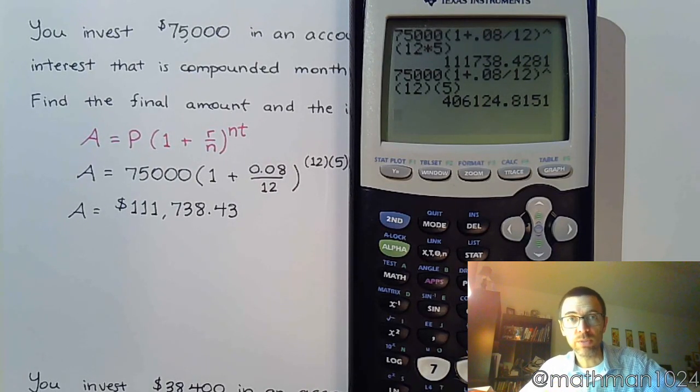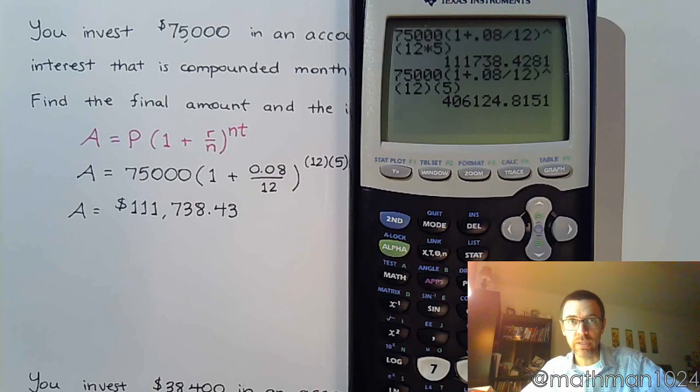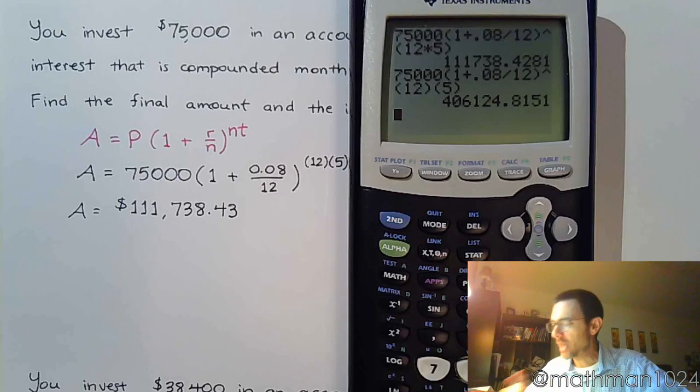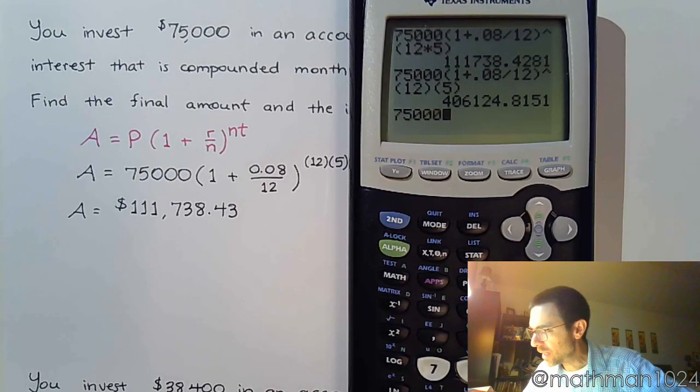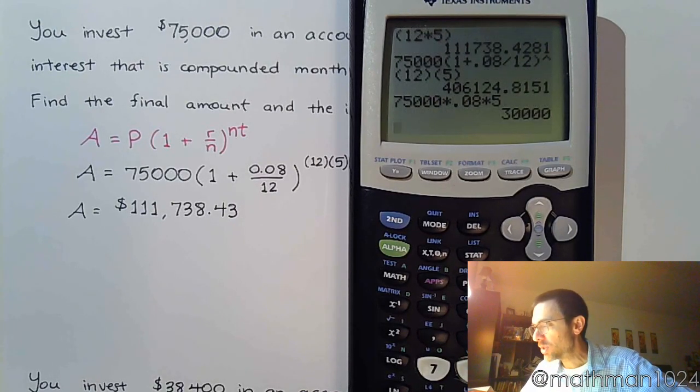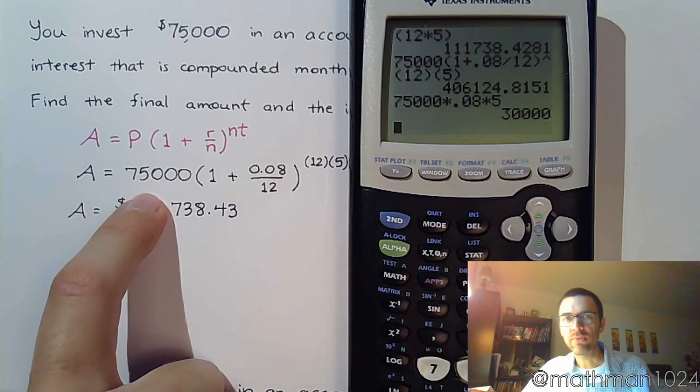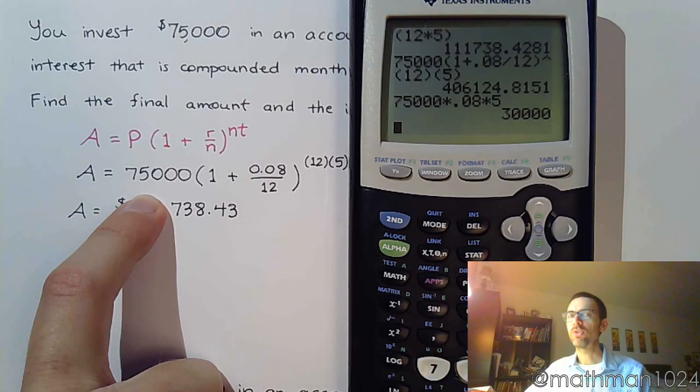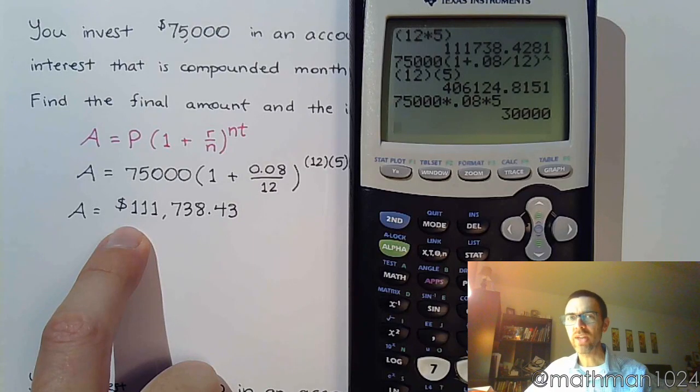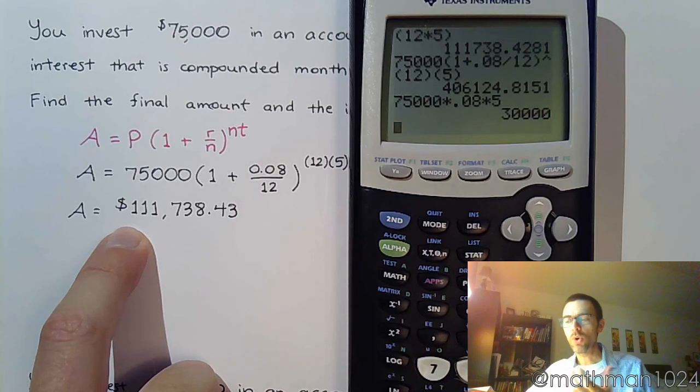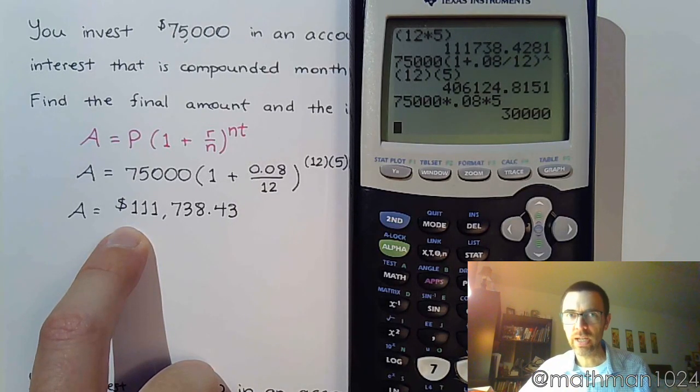Well, you can do a calculation of simple interest to get an estimate for, like, the bare minimum interest that you should earn. And, the simple interest calculation is taking your principal times your rate times your time in years. So, it tells me that a rough estimate for how much interest I should earn is $30,000. So, $30,000 plus the $75,000 I start with gives me $105,000. So, the $111,000 is not really that far off. And, it makes sense because of the way that compound interest works. You earn interest, and then you earn interest on the previously earned interest.